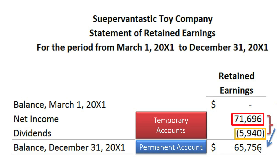These temporary accounts need to be zeroed out and their balance transferred into retained earnings. The key point to pay attention to, though, is that this is just the financial statement. We have not actually recorded the closing of these accounts into the retained earnings account in the actual ledger accounts. We will need to record closing entries that we will then post to the ledger accounts to close these temporary accounts into the retained earnings ledger account.